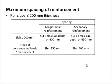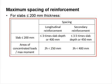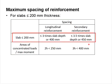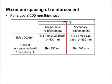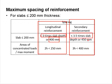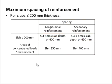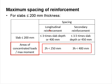For slabs less than 200mm thickness, you refer to a different table. For longitudinal reinforcement bars, the spacing is limited to 3 times the slab depth or 400mm, whichever is less. For secondary reinforcement bars, which are meant to control cracking, it should be less than 3.5 times the slab depth or 450mm. If the slab is subjected to concentrated loads or high moment loads, you will have to limit spacing accordingly.